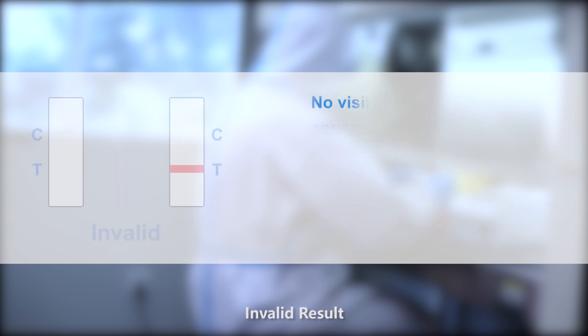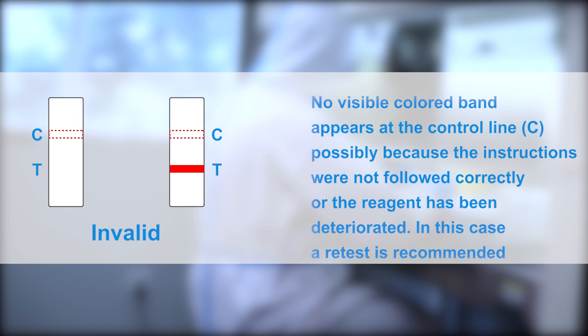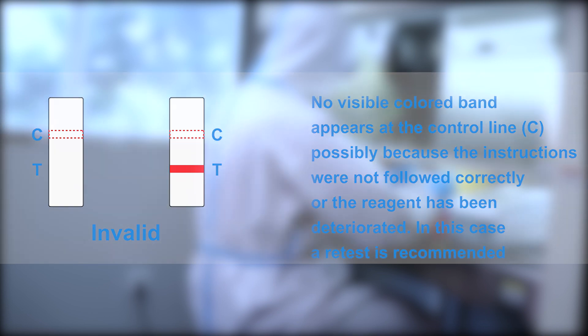Invalid result: No visible colored band appears at the control line, possibly because the instructions were not followed correctly or the reagent has been deteriorated. In this case, a retest is recommended.